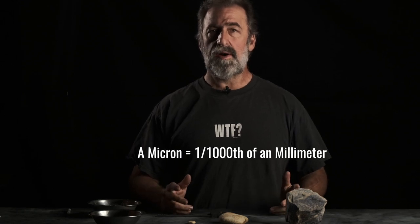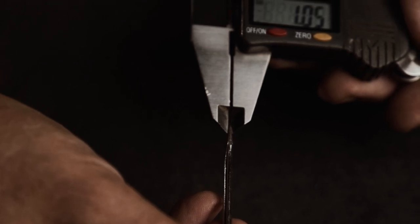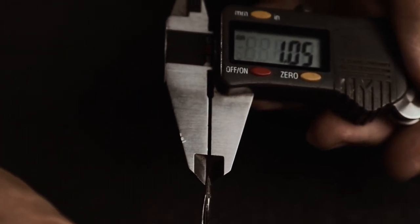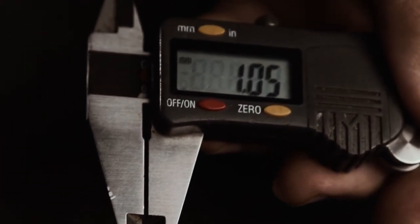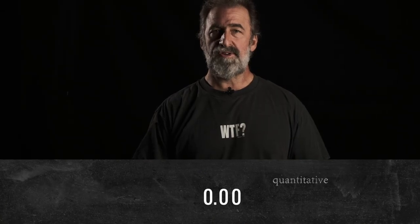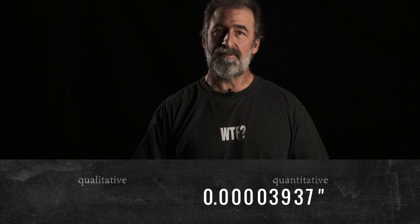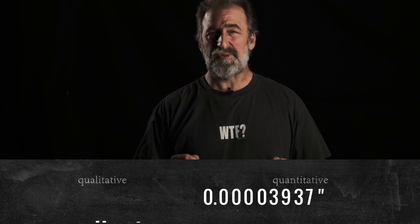On this side of the pond, we mostly deal in inches. By definition, a micron is one one-thousandth of a millimeter. This is a millimeter — it's about one twenty-fifth of an inch. A micron is about 0.00003937 inches. To use a qualitative term, that's really tiny.